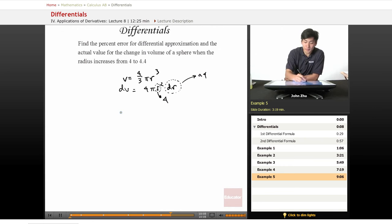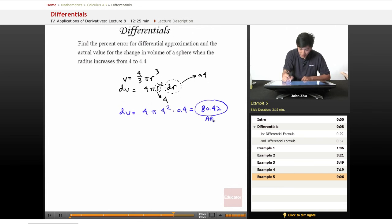The change in volume is going to equal 4 pi r squared times 0.4, which equals about 80.42. So here is our approximation using differentials.